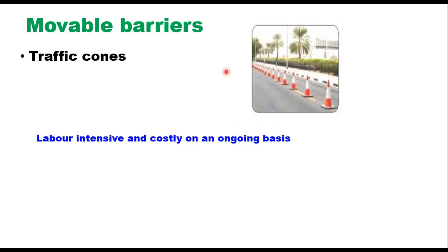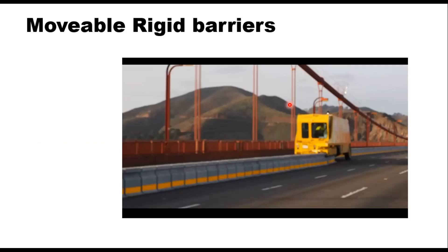The second method is movable barriers. Movable barriers of various types are used to separate lanes of opposing traffic. The simplest dividers are traffic cones, hand-laid along the new lane. These dividers, supplemented with signs, are very effective; however, they are labor intensive and costly on an ongoing basis.